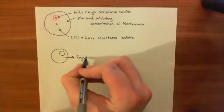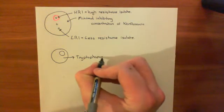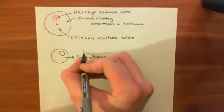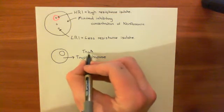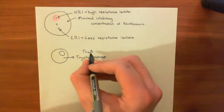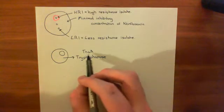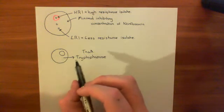And the specific tryptophanase that this enzyme, that this bacteria makes, is a TnaA. That's what it's called. Tryptophanase is this TNA bit. And this A here just is the specific tryptophanase it is. So the tryptophanase that this E. coli makes is called TnaA.